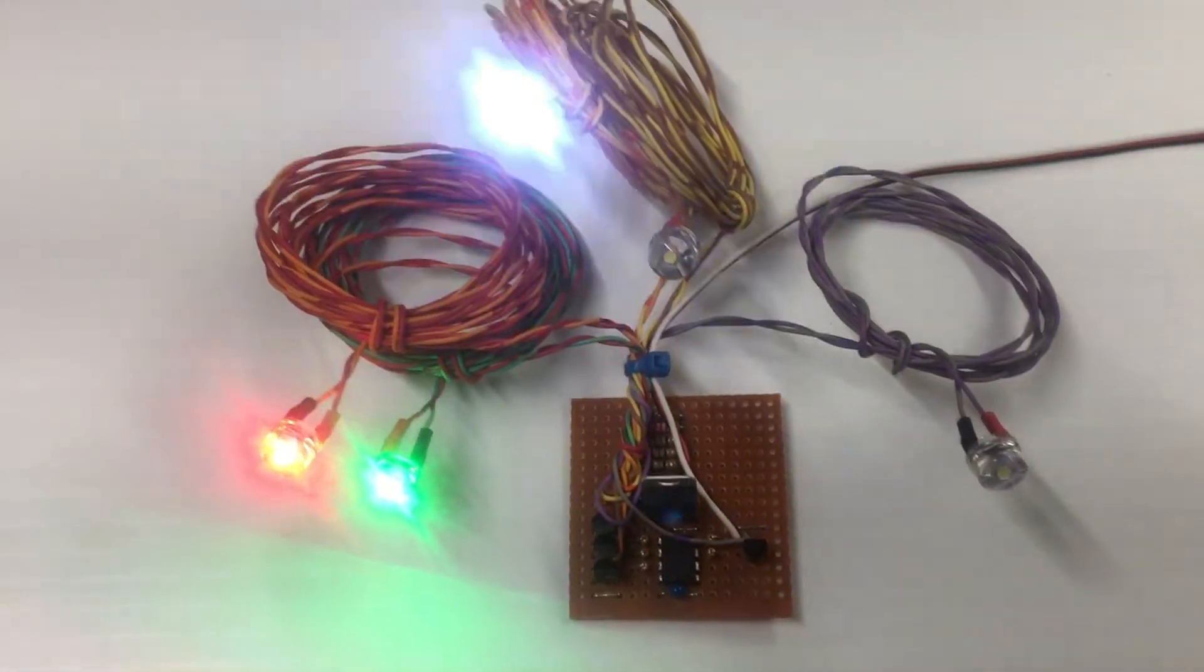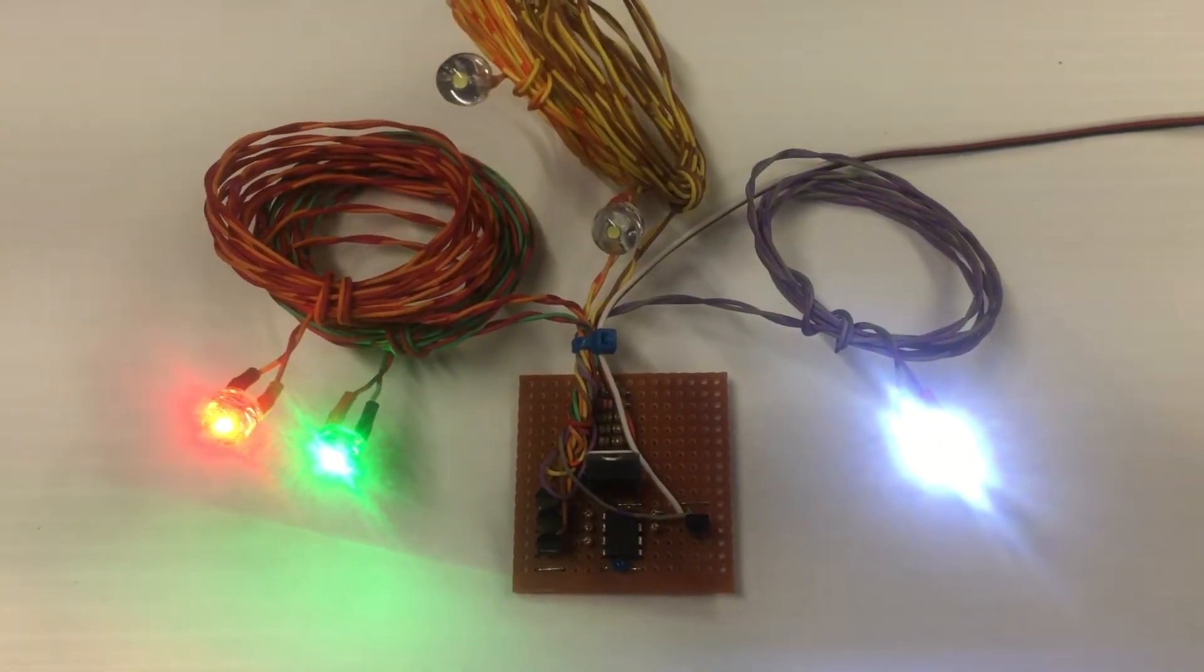They were kind of blending together in the camera, so it didn't look like there was a red and a green. But you've got a red, a green, two asynchronous strobes, and the landing light.